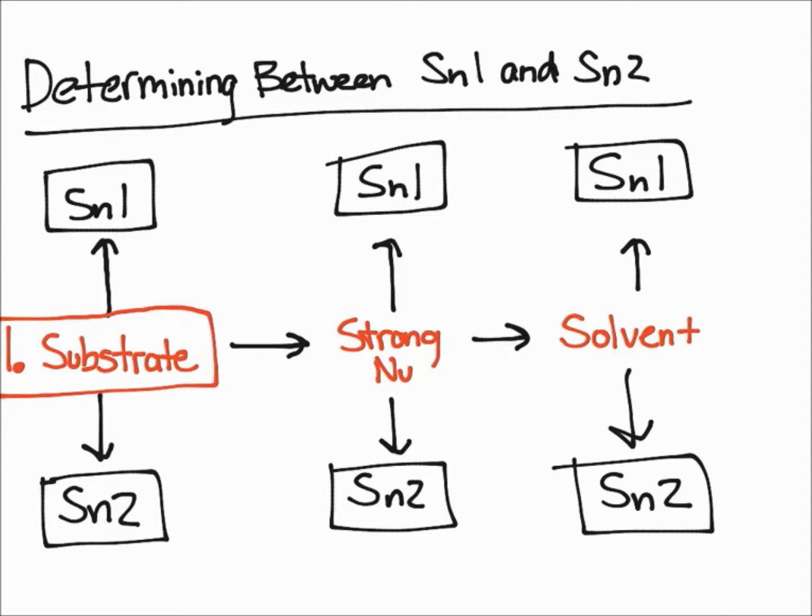You have to identify whether the substrate is primary, secondary, or tertiary. We're primarily just going to focus on alkyl groups because the allylic and benzylic groups we're going to talk about later on, but they do factor into determining whether something's SN1 or SN2. For now, we're just going to consider alkyl groups.